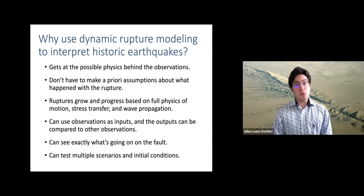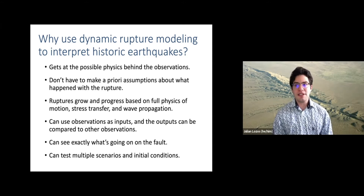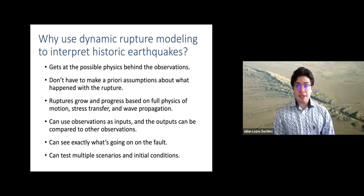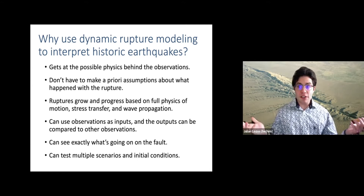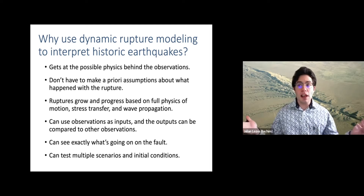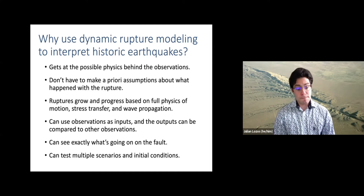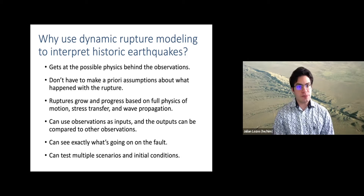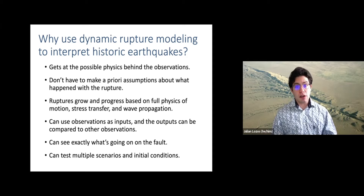I use dynamic rupture modeling as a way to understand the physics of the earthquake process. It's a technique that uses everything we know about the physics of the faulting process to calculate synthetic earthquakes. Why would I use this for historic earthquakes? I think this can be a really good tool to help interpret a large set of more qualitative observations.